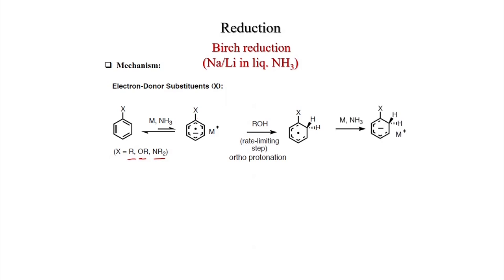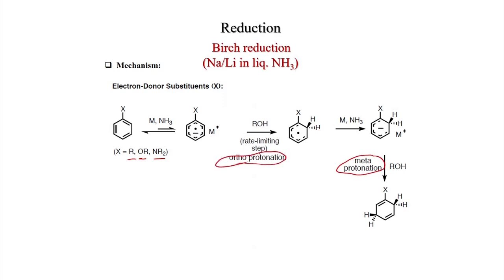Next, lithium in liquid ammonia converts the radical to an anion, which stays at the meta position because the radical was formed earlier and the two radical/anion sites prefer to be maximally para to each other. This results in meta protonation. Overall: first ortho protonation, then meta protonation, giving a cyclohexadiene where the substituent is on the carbon containing the double bond.